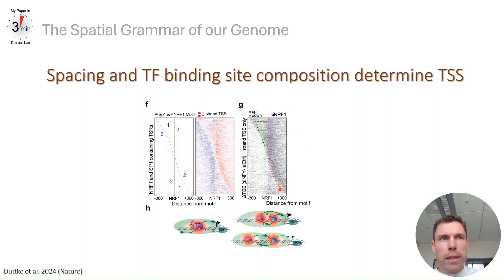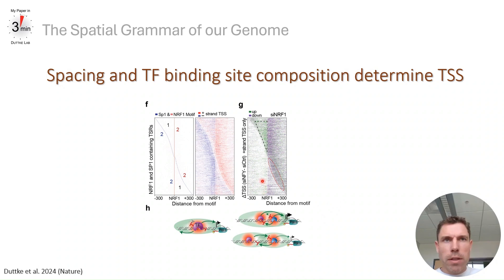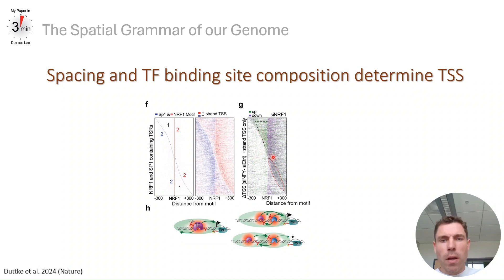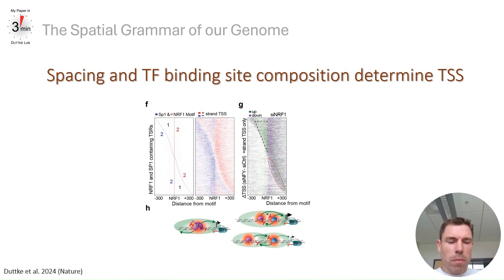Knockdown of NF1 — centered in the graph — caused up-regulation of TSS at NF1 sites downstream, while causing loss of TSS at the preferred positions upstream of NF1.